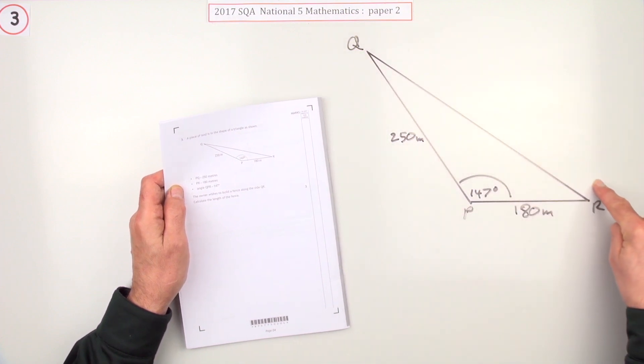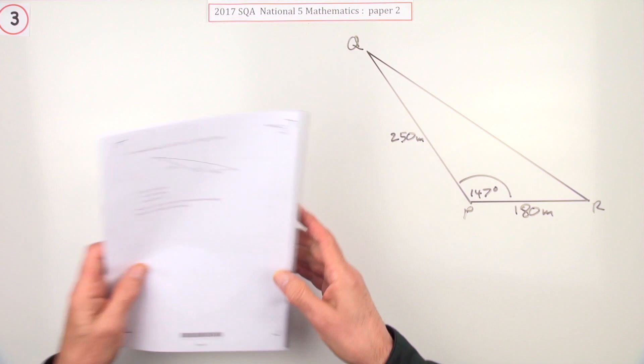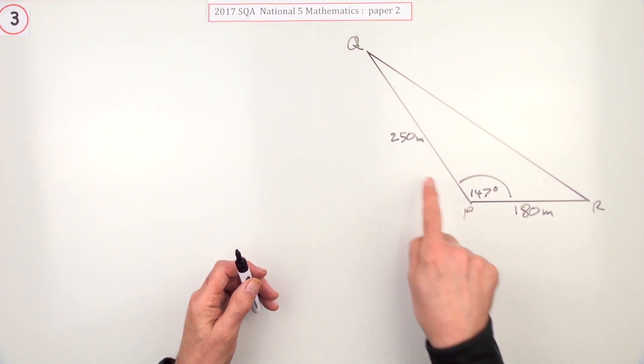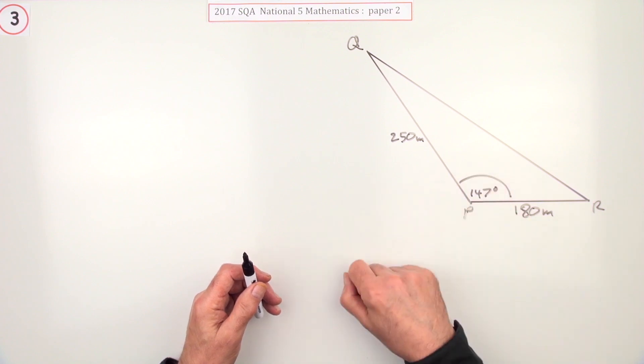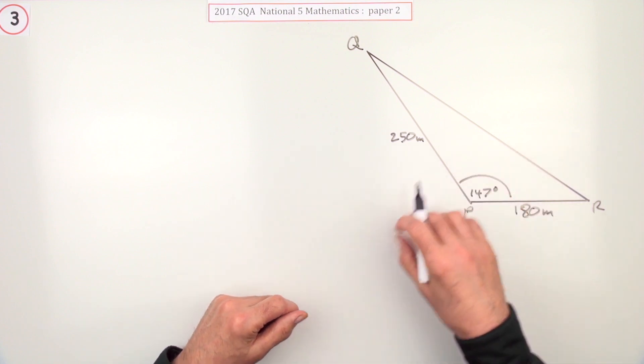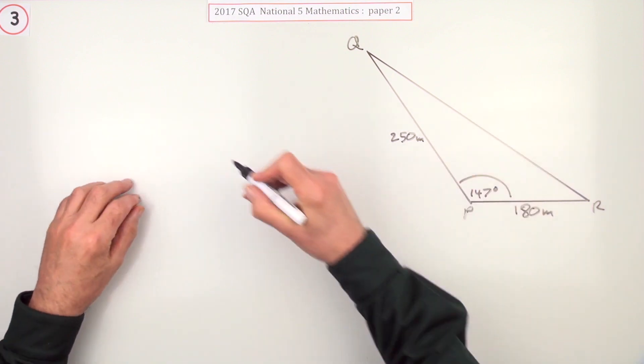Calculate the length of that fence. Well you recognize that pattern straight away: two sides and the included angle. It's either the area of the triangle or it's the cosine rule. You check up the front because it's not the area question, it's the length question, so it's a cosine rule.